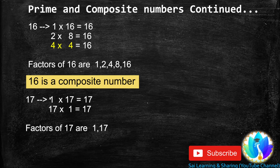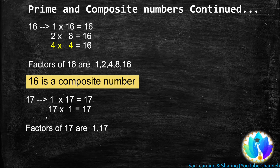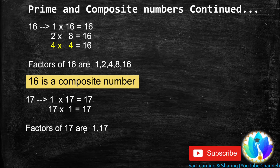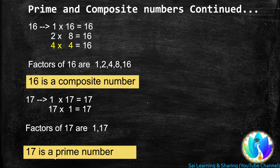Next, 17. 1 is a factor of every number, so 1 × 17 = 17. If we learn the divisibility rules, you can easily find out whether a number is prime or composite. 17 is not an even number, so it is not divisible by 2. When we add the digits, we get 8, and 8 is not a multiple of 3. At last, 17 only goes to 17: 17 × 1 = 17. So the factors of 17 are 1 and 17. Since a number with two factors is a prime number, 17 is a prime number.